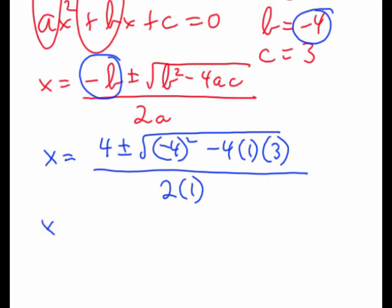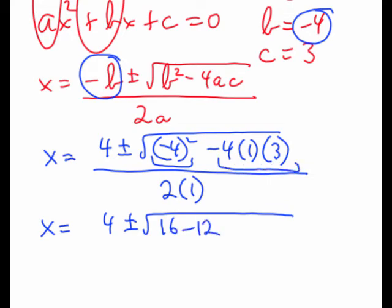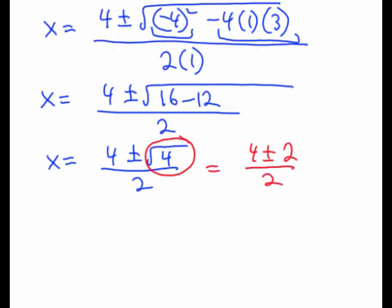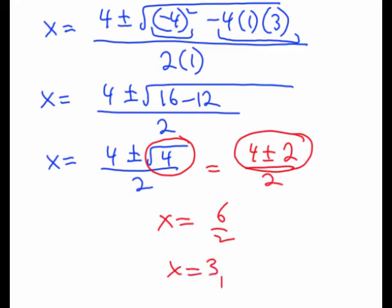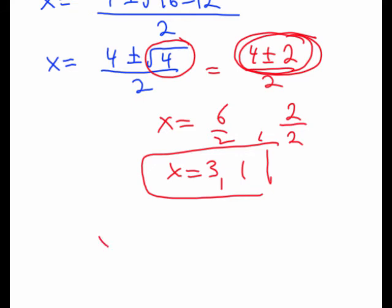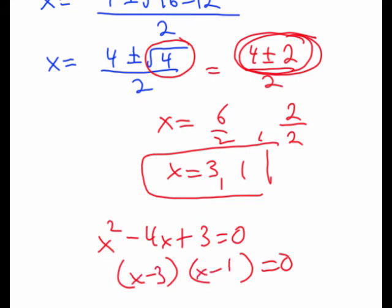Working this expression out: 4 plus or minus the square root of 16 minus 12, which is 4 — and the square root of 4 is 2. So we have two answers: 4 plus 2 is 6 over 2, which is 3; and 4 minus 2 is 2 over 2, which is 1. I have the solutions to my equation. You'll notice the answers came out quite nice, which is generally a hint that the original equation could have been solved by factoring — and indeed it could have, giving x equals 3 and x equals 1.